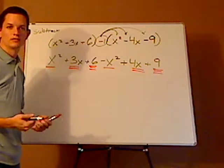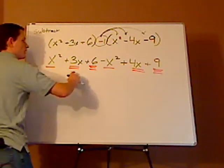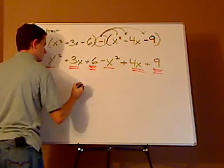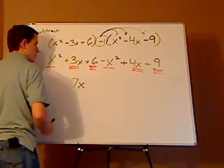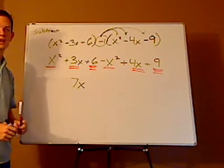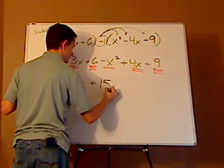And then you just have a return. So, x² minus x² - that cancels out. Well, 3x plus 4x gives you a 7x. And then 6 plus 9 gives you a positive 15.